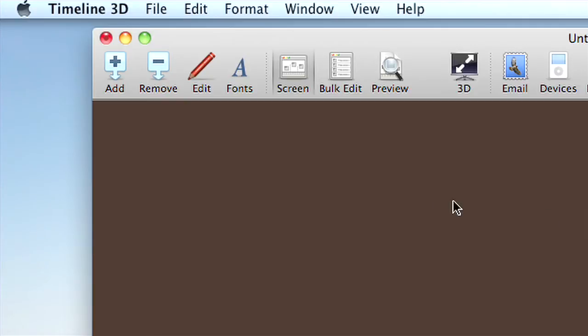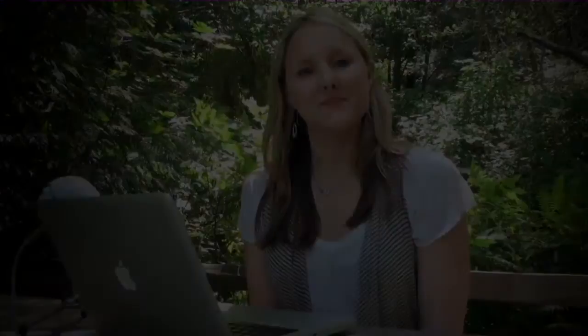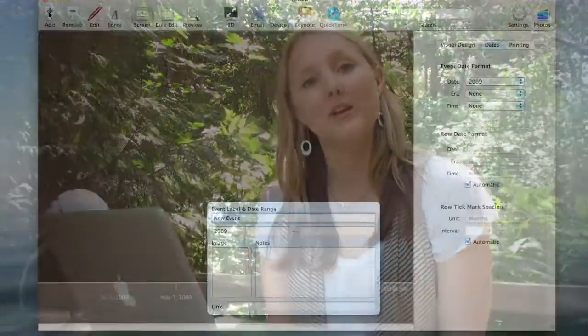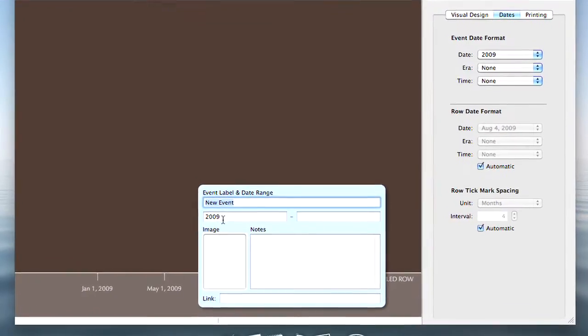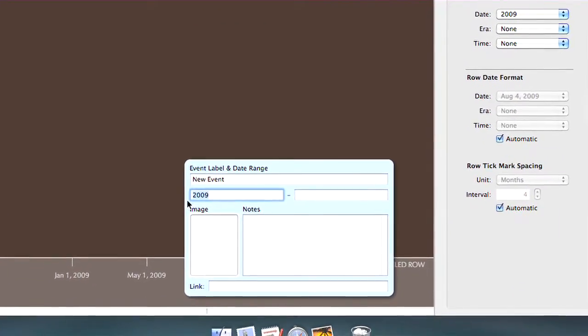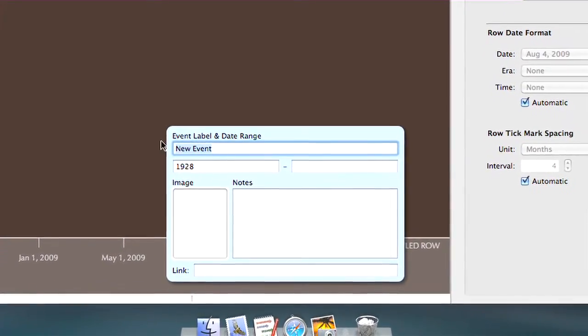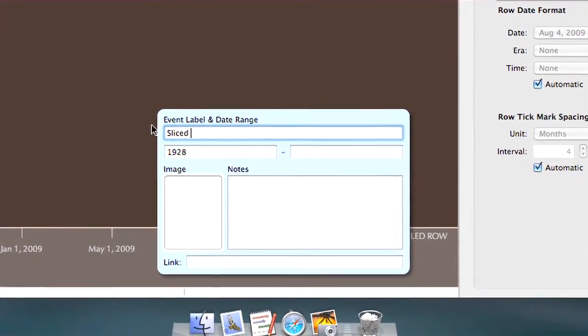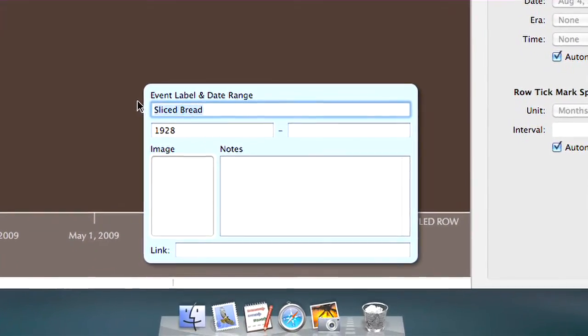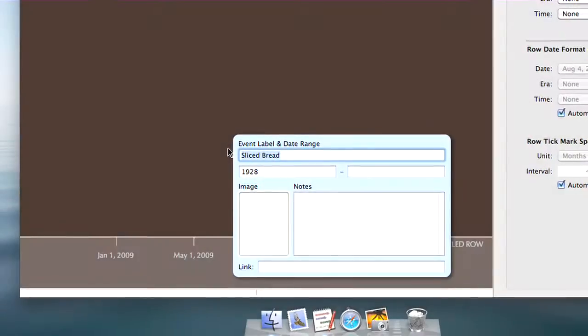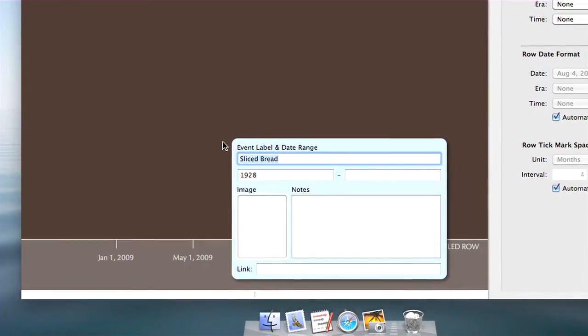Now I'm going to add the first historical event by going to the top of the chart screen and clicking the Add button. You can also add events by using the keyboard command, Command E. When you add an event, the light blue edit box will pop up. This is where you can add information for each event. Every event needs to have at least a label and a start date. You can add an end date if that's necessary, but you don't have to. Now I'm going to add a couple more events to my timeline.